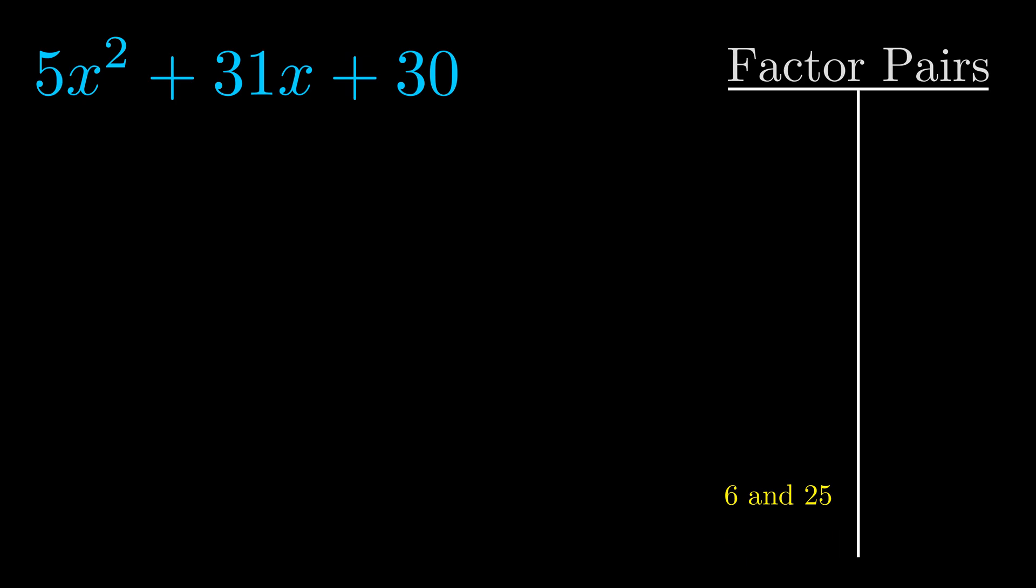Now once we have this factor pair, what we want to do is use it to split up the b value.